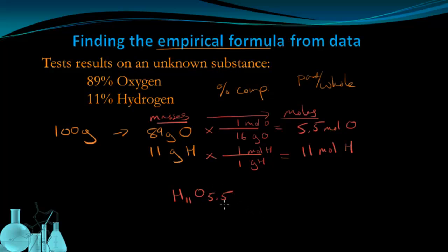One of the things I can do is divide by the smaller of the subscripts. I'm going to divide this by 5.5, and I'm going to divide the 11 by 5.5. That's going to get me 11 divided by 5.5 is 2, and 5.5 divided by 5.5 is 1. So this is the empirical formula of my substance, H2O.